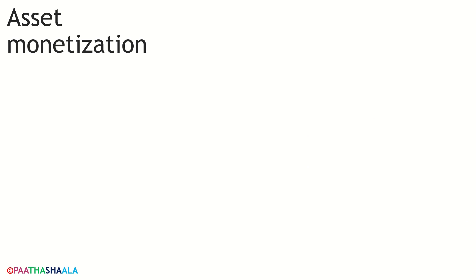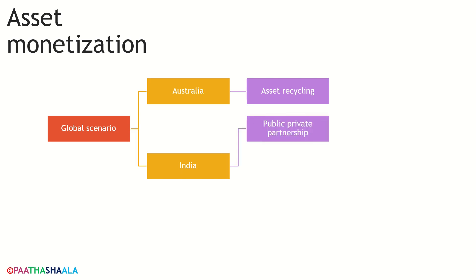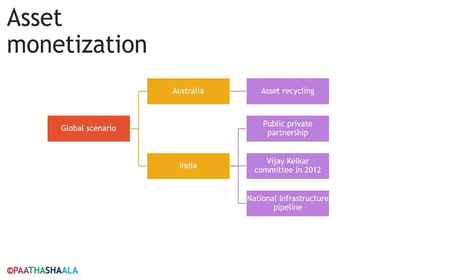Asset monetization in the global scenario — the monetization of assets is not a new concept. Many countries including the United States, Australia, Canada, France and China have effectively utilized this process. Asset recycling has been enacted in Australia through the asset recycling initiative of the federal government, where states are encouraged to recycle assets and utilize sale proceeds for productivity and infrastructure by asking private firms to fund and run public infrastructure. India has been monetizing assets for a long time through public-private partnership. In India, this concept was suggested by a committee led by Vijay Kelkar on the path of fiscal consolidation in 2012, which asked the government to use resources for financing infrastructure needs.